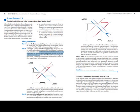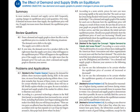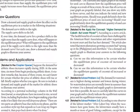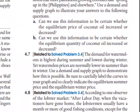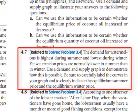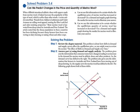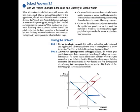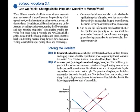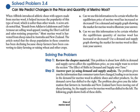Each chapter includes two to three solved problems that use real-world products, events, and policies to help students break down and answer economic problems step by step. A related follow-up exercise appears in the end-of-chapter problems and applications, so students can practice what they've learned. There are seven new solved problems, and many of those retained from the previous edition are updated.